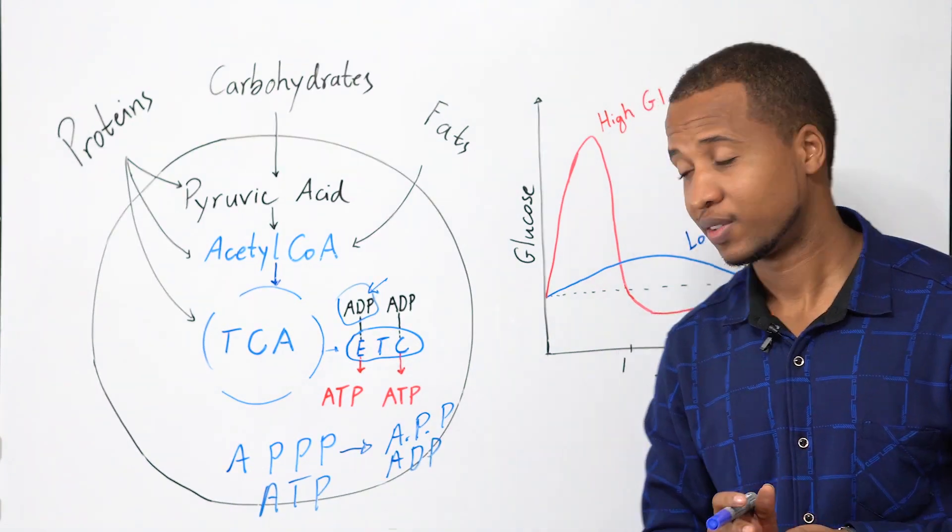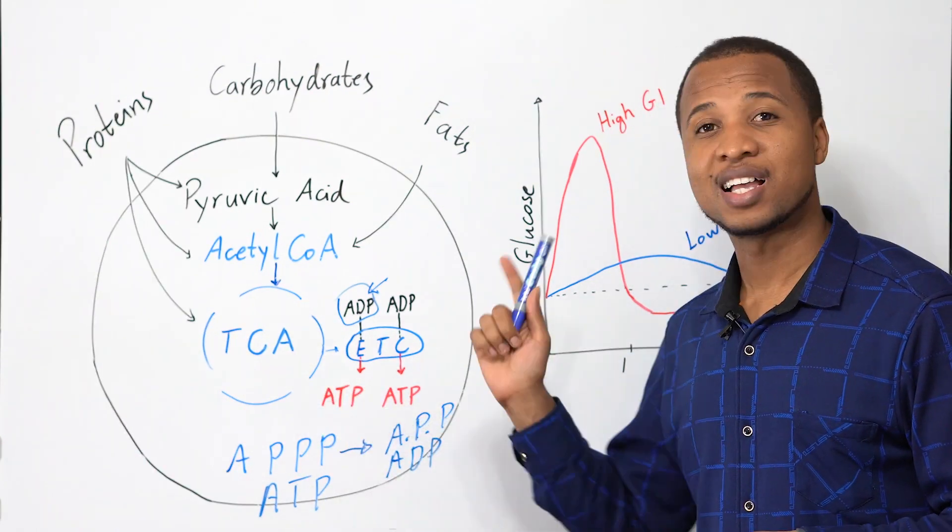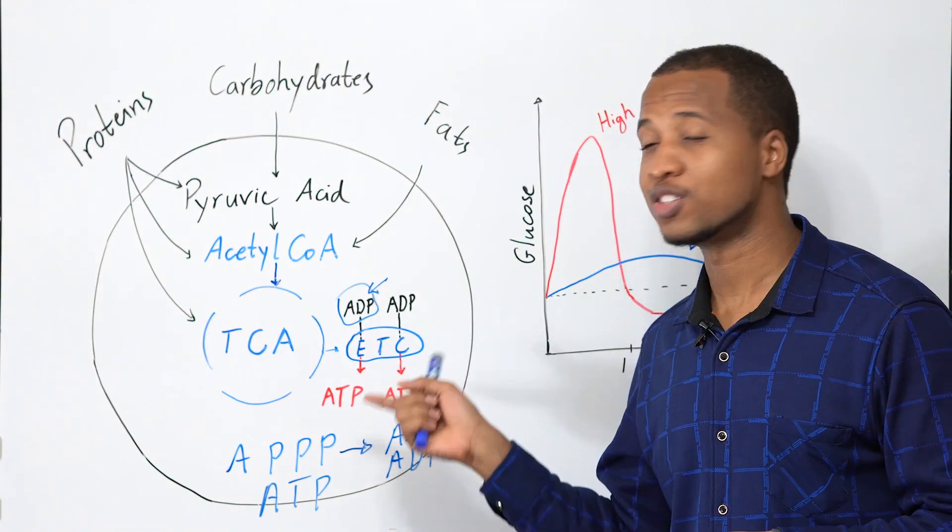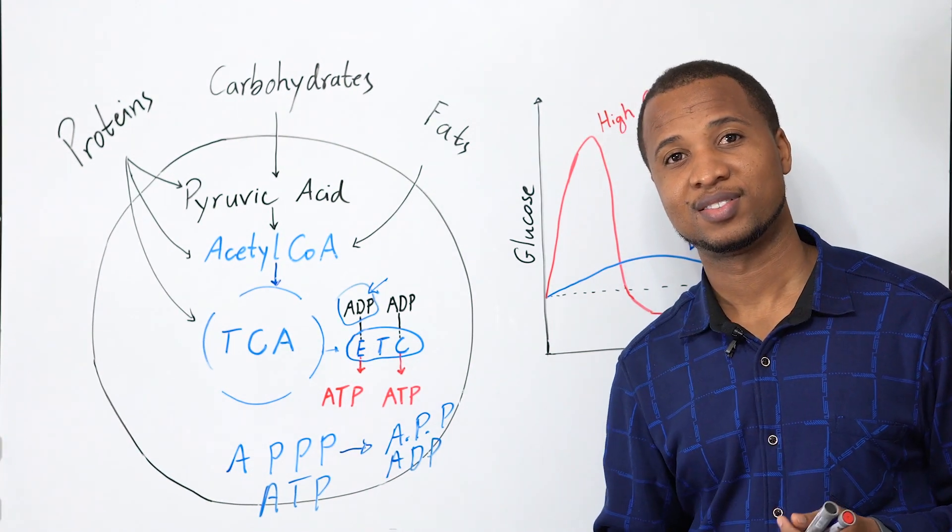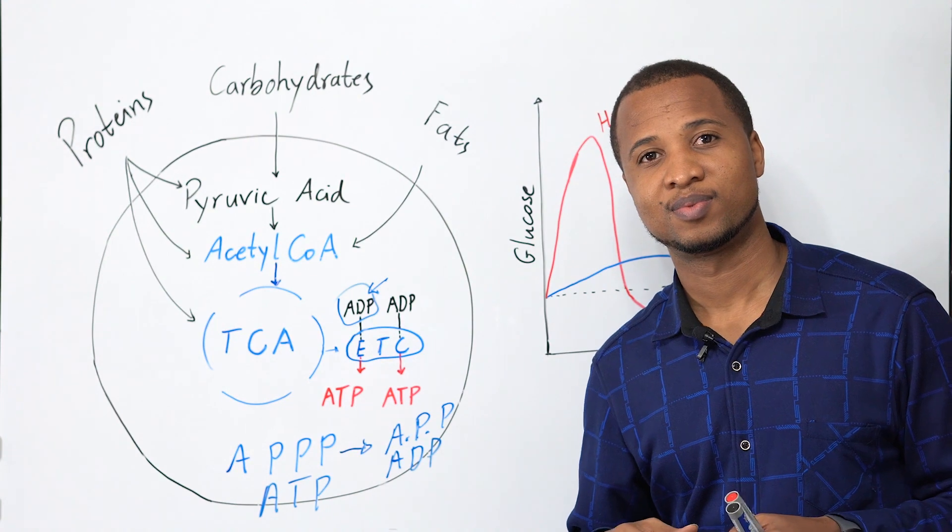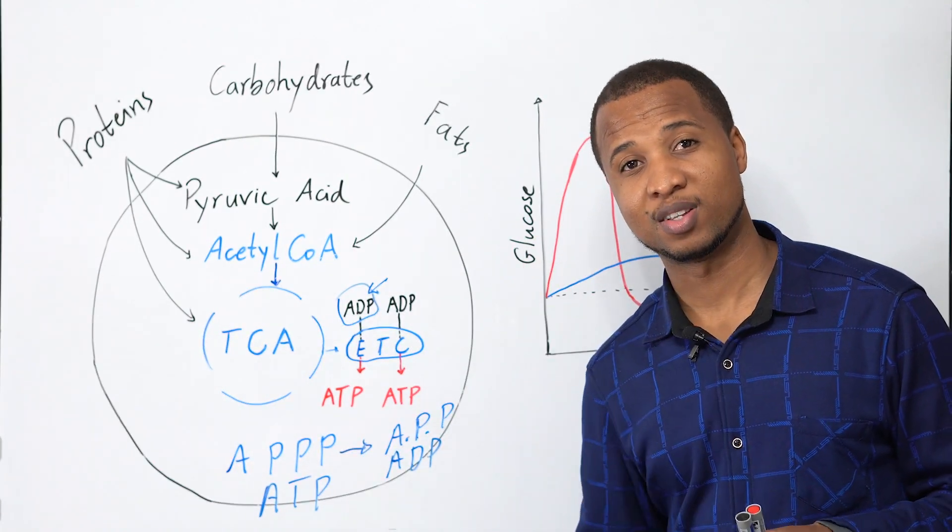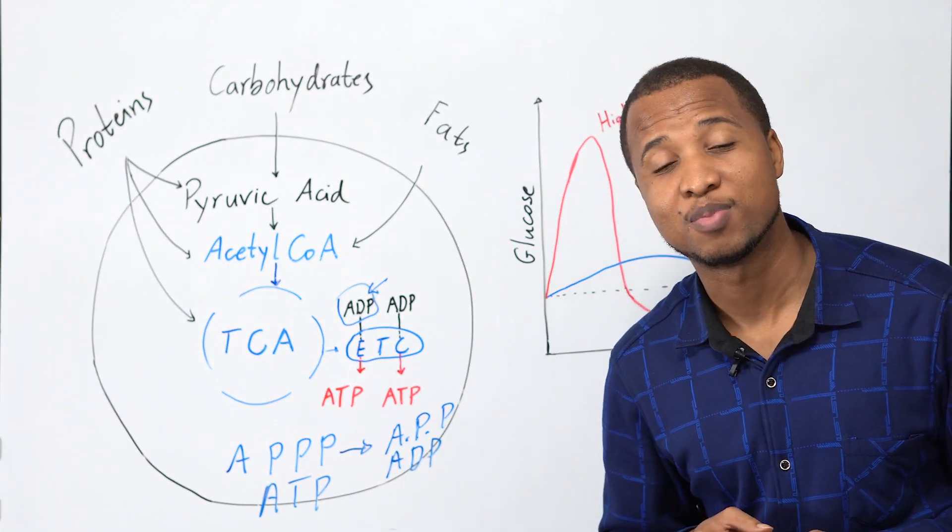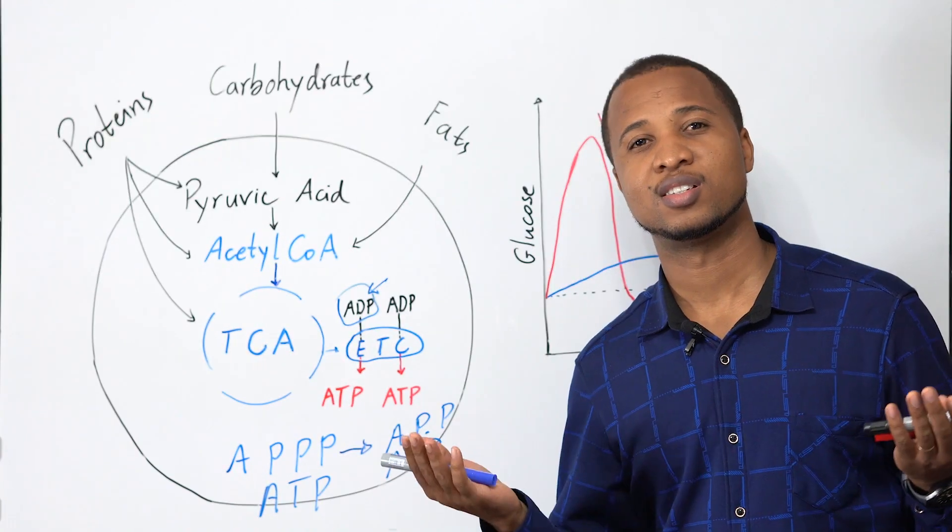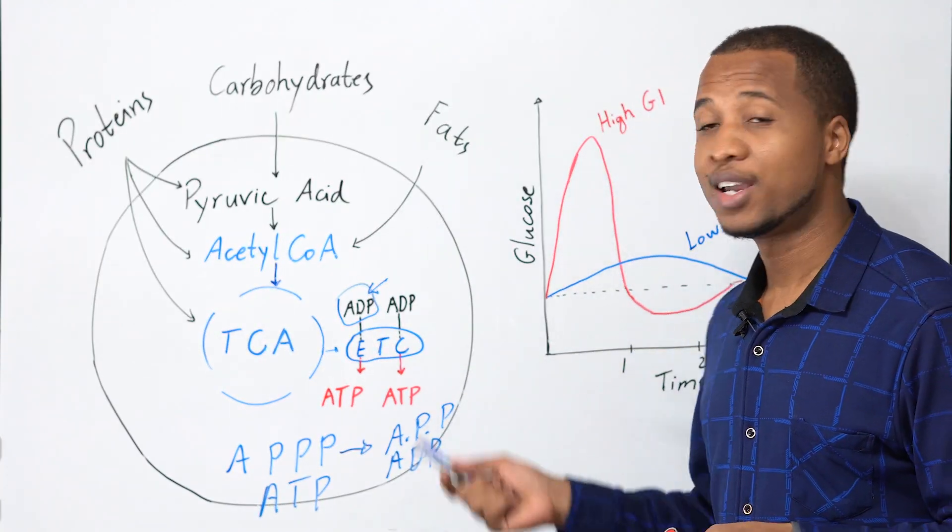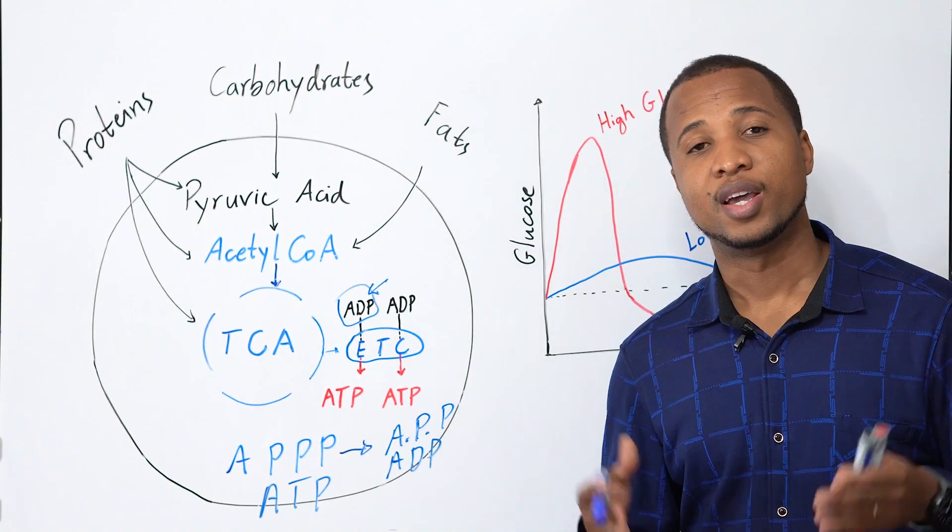Now just a quick question: because our body is constantly using ATPs, one cell in our body can use millions of ATPs every what? Every year? Every month? Every hour? No. Every second, one cell can use millions of ATPs. So can you imagine the amount of ATPs that we need? Because we have trillions of cells in our body. So for someone like me that is about 71 kilograms, I need about 71 kilograms of ATP every single day.